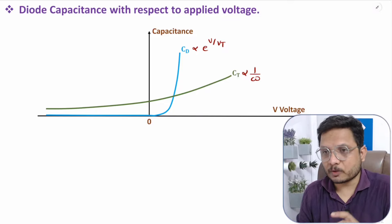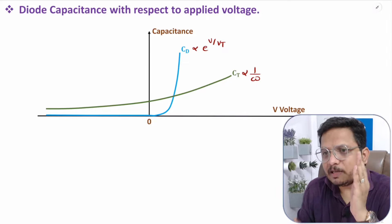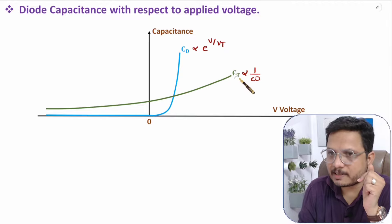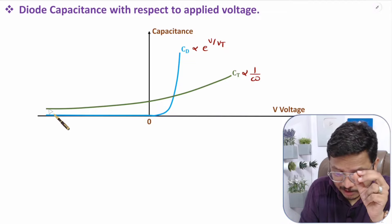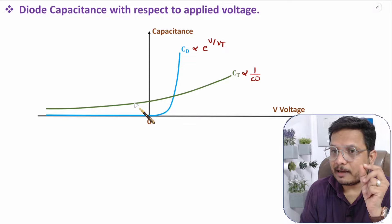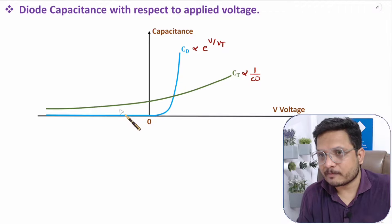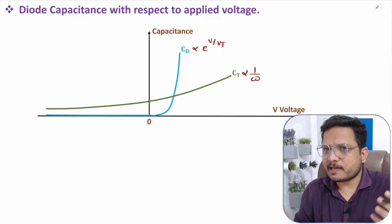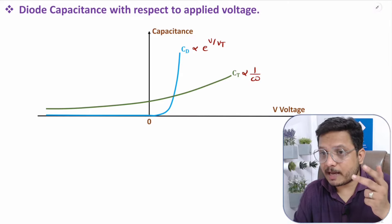In a p-n junction, as you increase forward bias voltage, the depletion region width decreases. In forward bias both capacitances are present, but the value of diffusion capacitance is way higher. In reverse bias, only depletion region capacitance is present, calculated as ε₀εr A/W, where W changes with reverse bias voltage. These are the basics you should consider for solving problems related to diode capacitance.